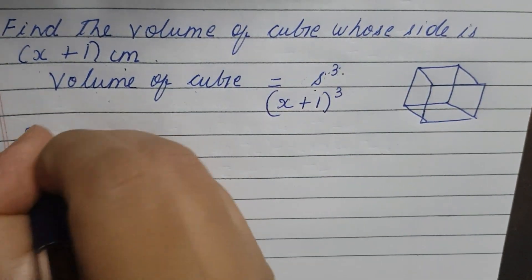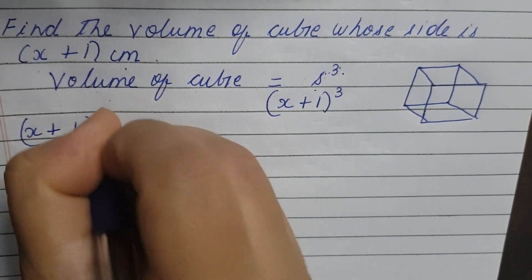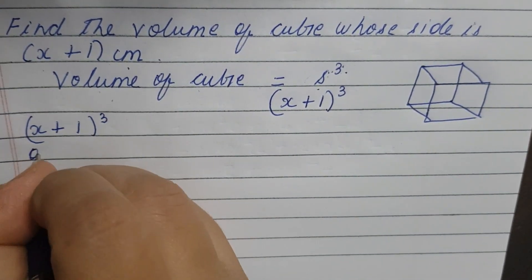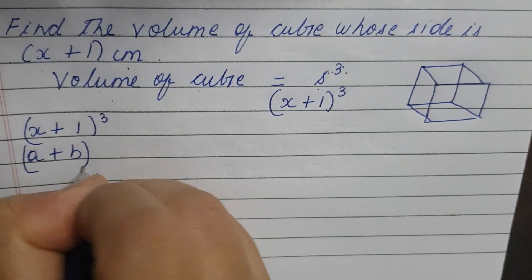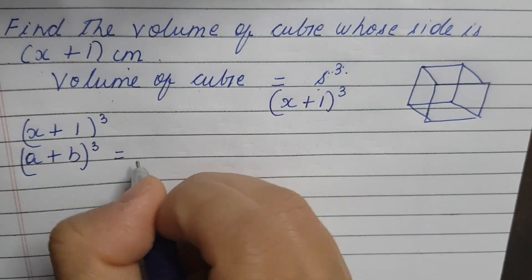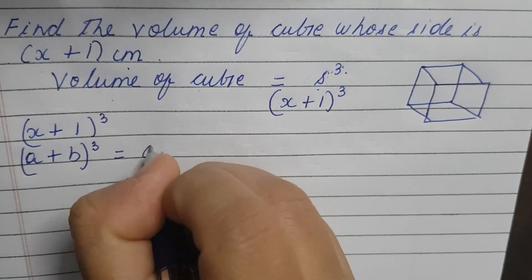So now, x plus 1 to the whole cube, what formula is? a plus b the whole cube formula is. So now, the formula is the identity.